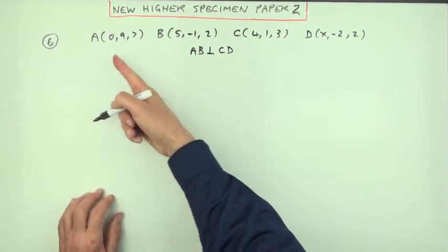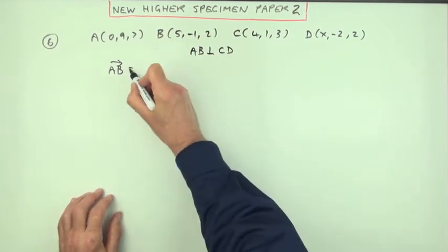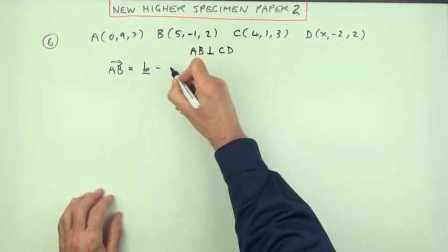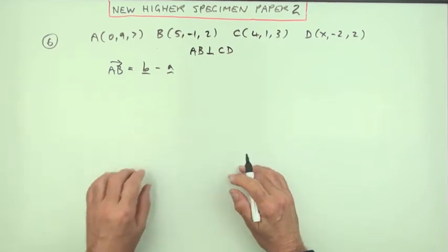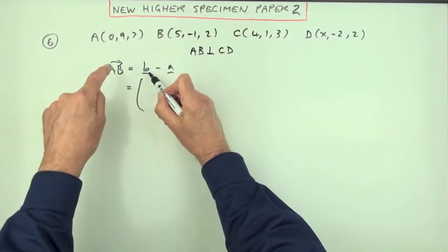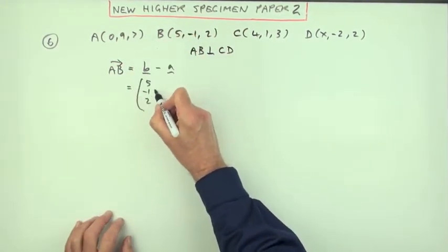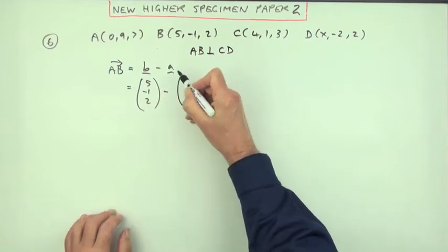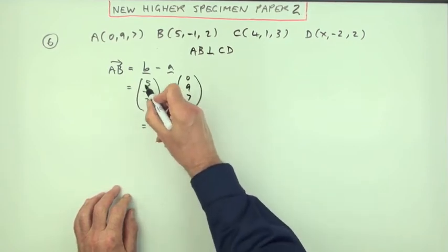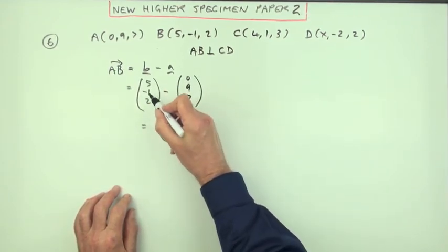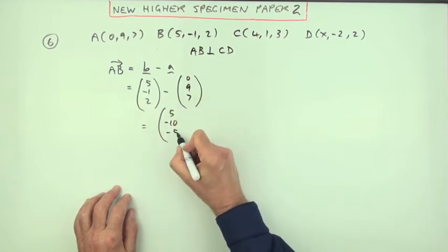I'll get the vector AB. I could do it by inspection, but I'll set it out. That will be B minus A, the position vector of B minus the position vector of A. The position vectors are just the coordinates written in a column. Position vector of A is zero, nine, seven. When you subtract them, you'll have five take away nothing is five, negative one take away nine is negative ten, and two take away seven is negative five.